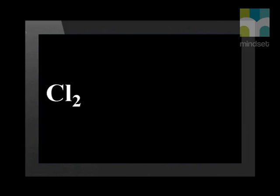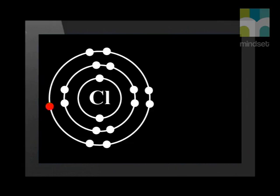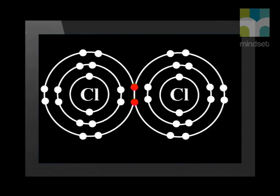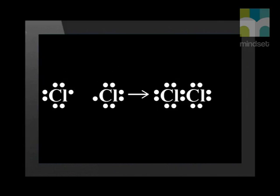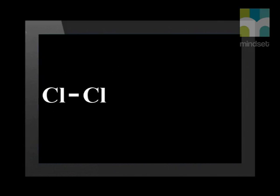The first example we will look at is the diatomic molecule of chlorine gas. The energy level diagram shows the seven valence electrons which are found in the outermost level. So chlorine needs one electron to complete the outermost energy level and reach stability. When two atoms of chlorine have their outermost energy levels overlap, we can see two electrons are shared between the atoms, allowing them to fill the outermost energy level. A single pair of electrons is shared between the nuclei, and this is called a single covalent bond. Here are the Lewis diagrams and the Cooper structure for this single covalent bond between the two chlorine atoms.